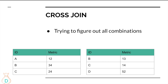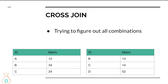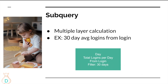The last join is cross join. It gives you all combinations between your IDs or categories. For example, ID A maps to B, C, and D in the second table, giving rows A-B, A-C, A-D. Then ID B gives B-B, B-C, B-D — that's already six rows. Then C gives C-B, C-C, C-D, and so on.